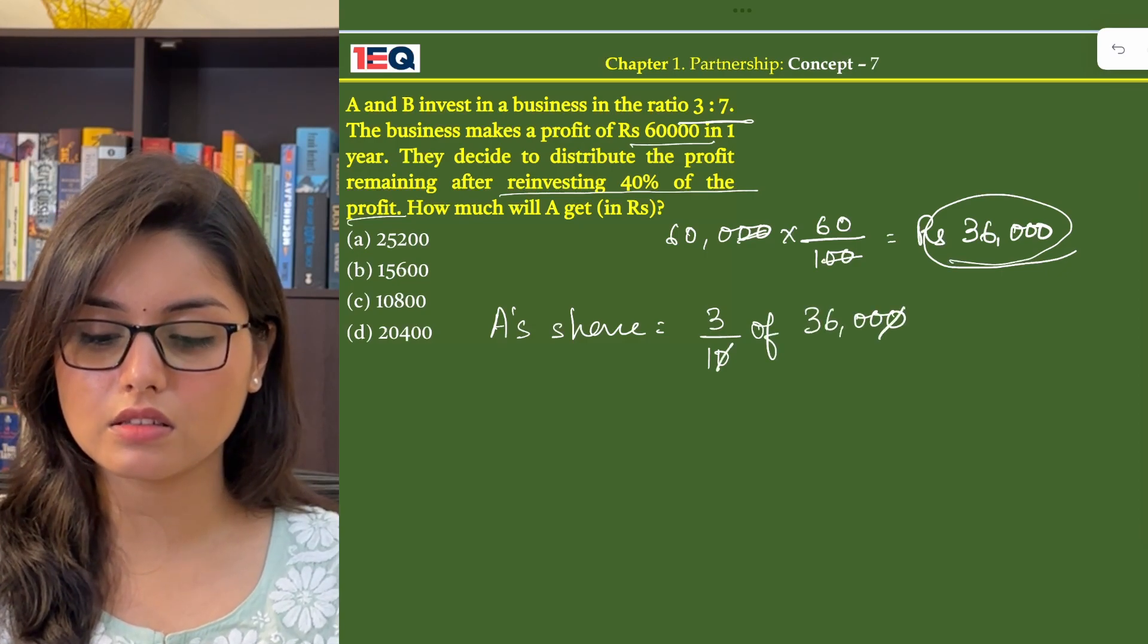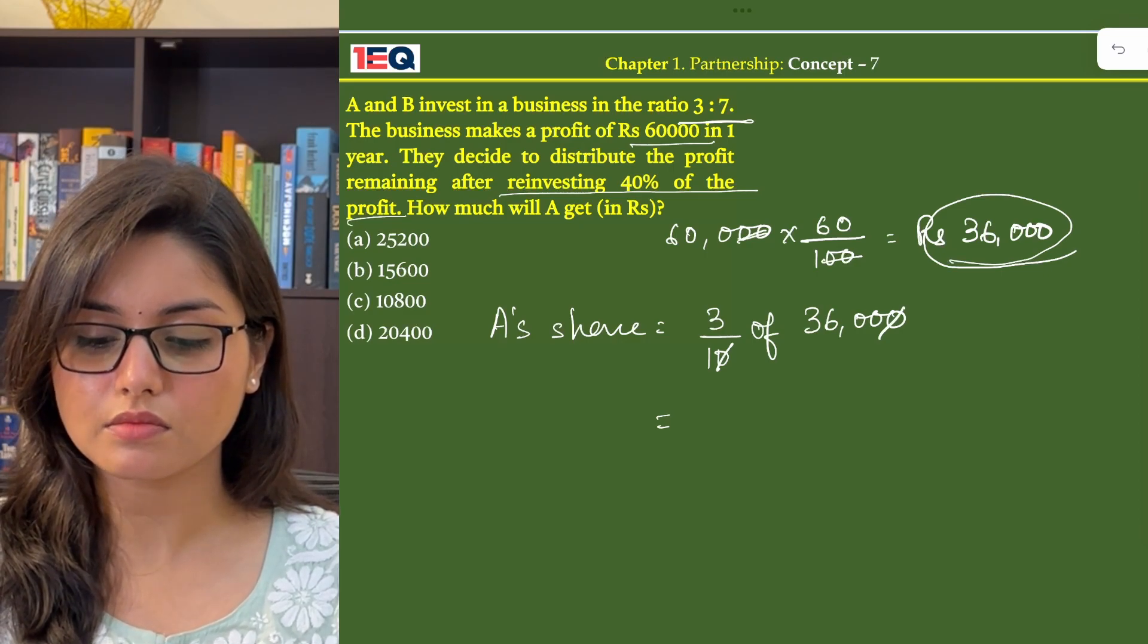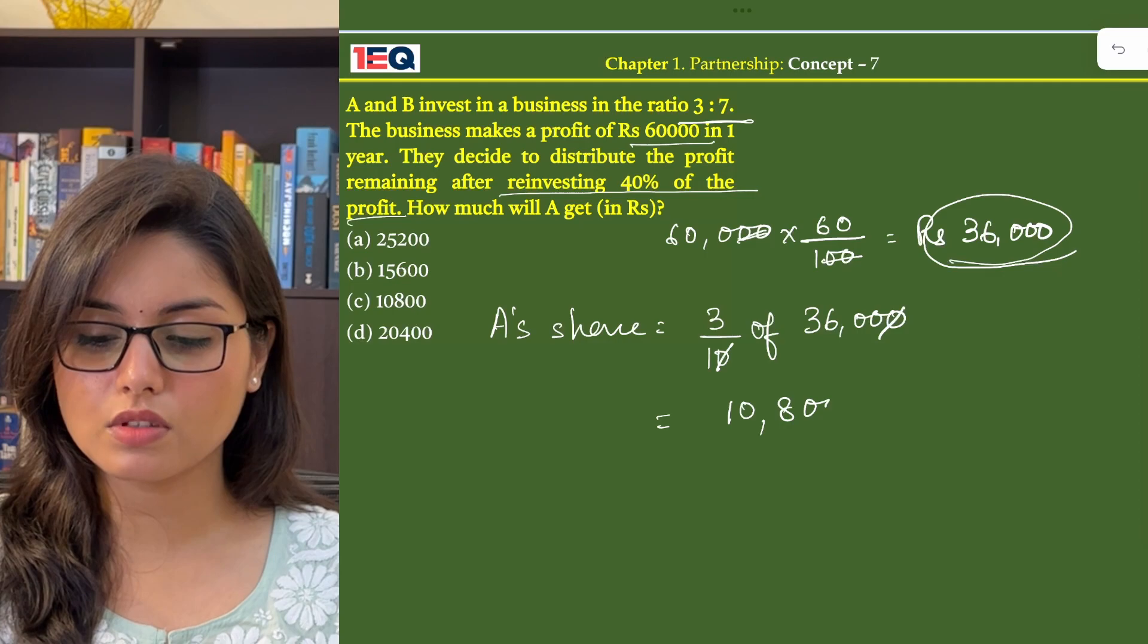0 gets cancelled. Now 3,600 into 3 gives us Rs. 10,800.